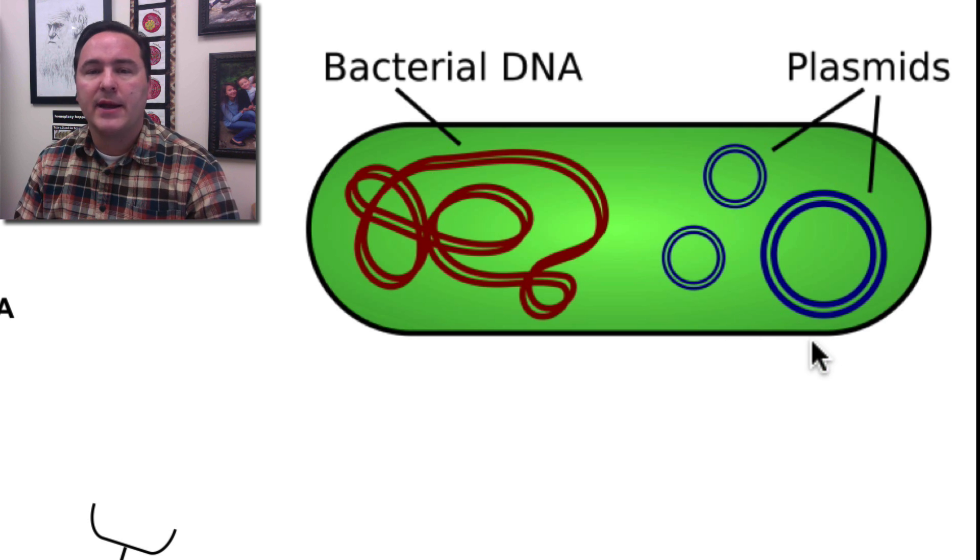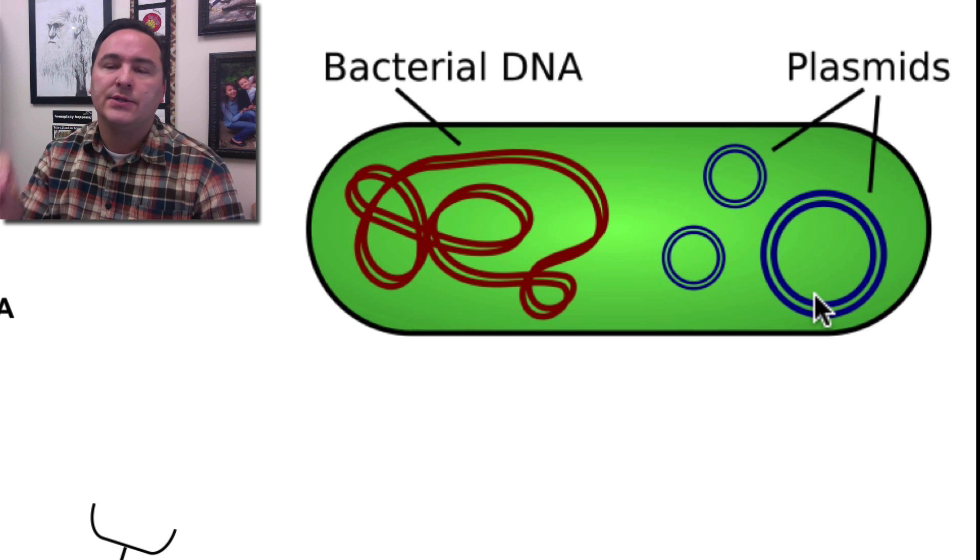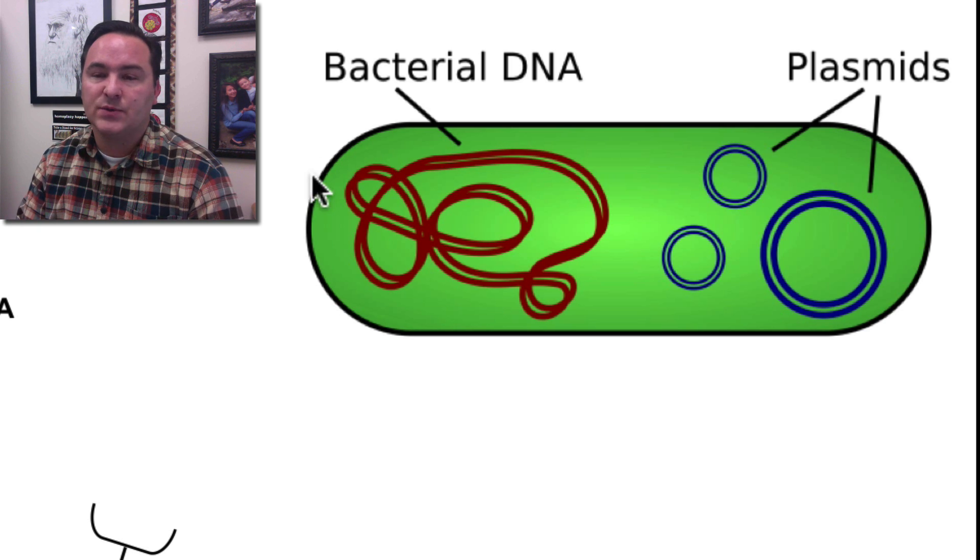bacteria can also incorporate plasmids, which are small circular pieces of DNA, into themselves as well.